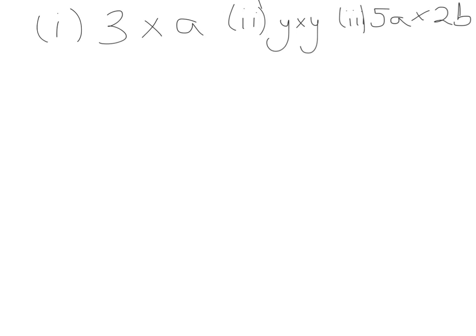The first thing I'm going to go through today is just a quick recap of what happens when numbers and letters come together and how they actually look. So in example one, we have three multiplied by A. In algebra, if a number and a letter are multiplying each other, you just put them together — they get stuck together. So we don't bother writing the multiplication sign anymore; we just write 3A.